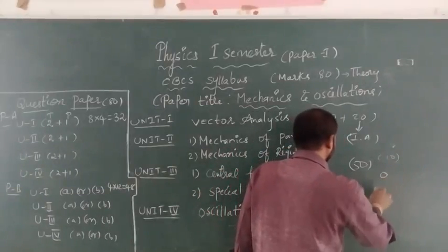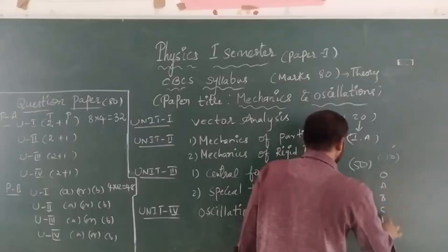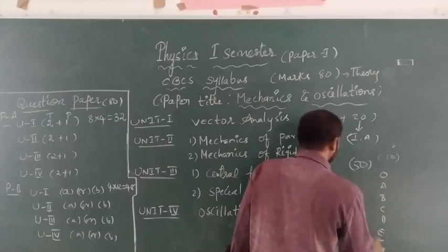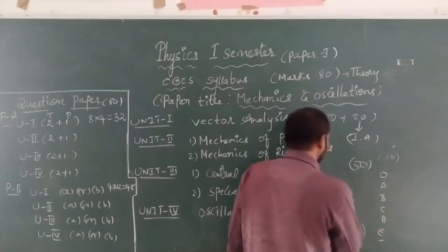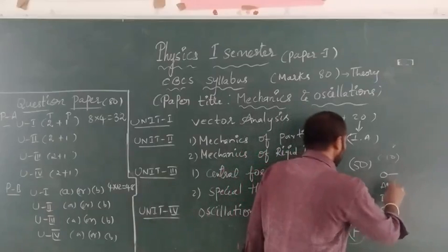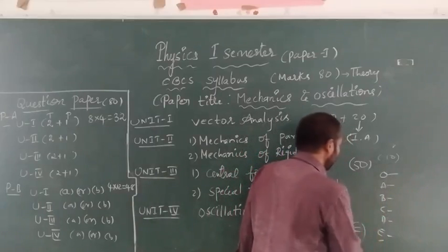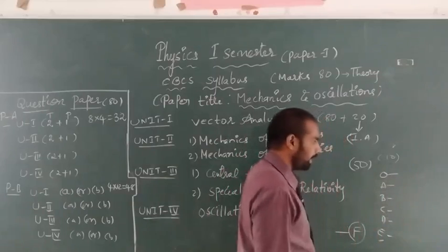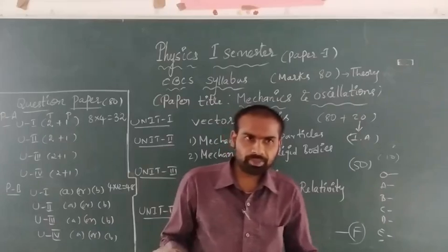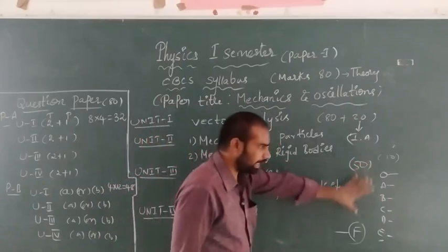The grades are: O for Outstanding, then A, B, C, D, E — and if you get F, you will have failed the examination, whether it is practical or theory. Those are the grading system details.